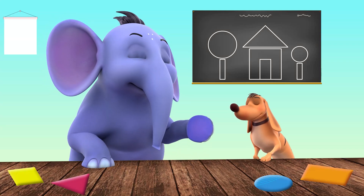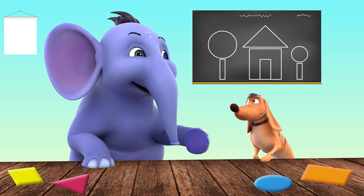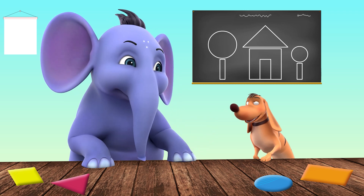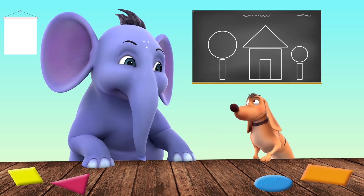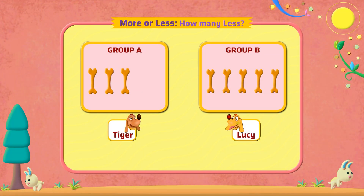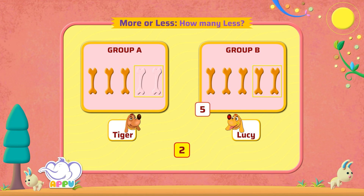Tiger, did you know that your friend can also say you have two bones less than him? No, how? Your friend Lucy has five bones. You have two bones less than her, which means you have three bones.